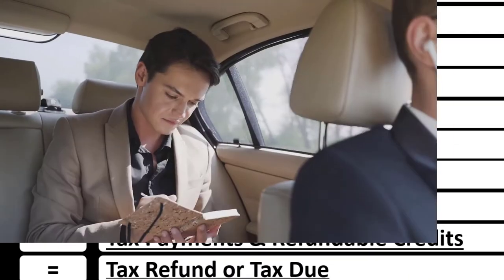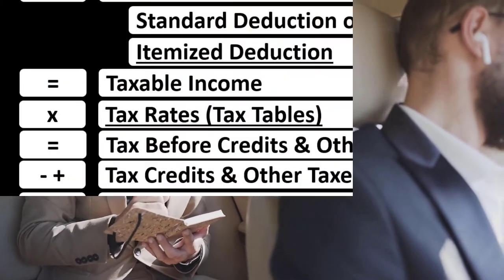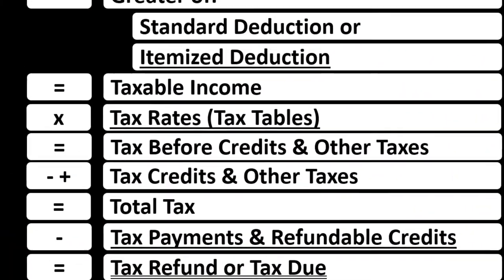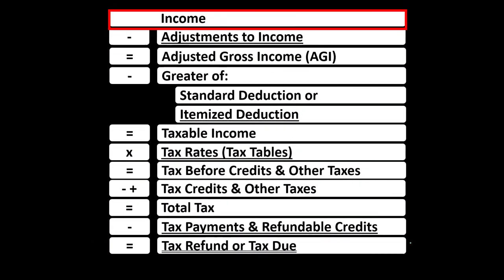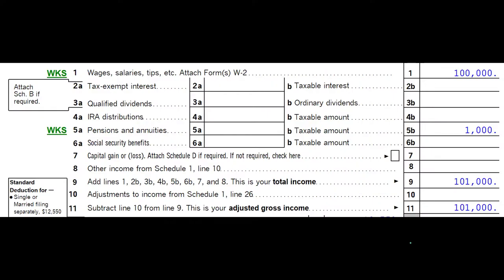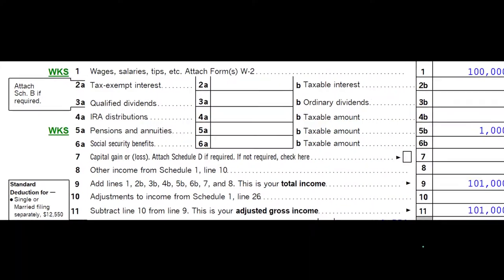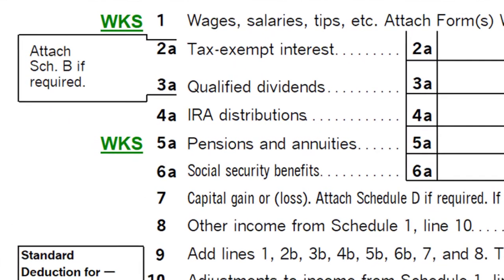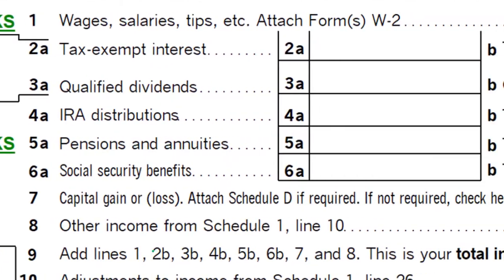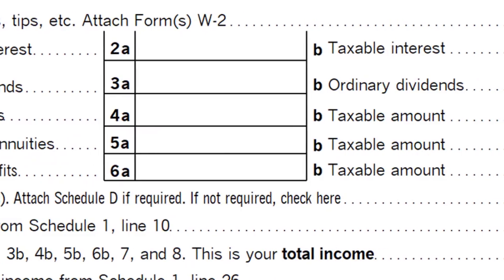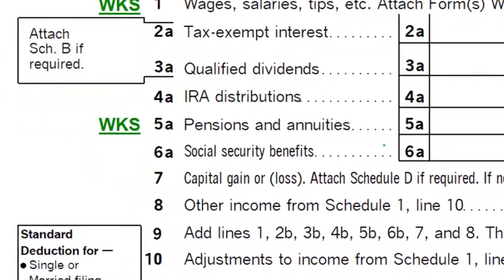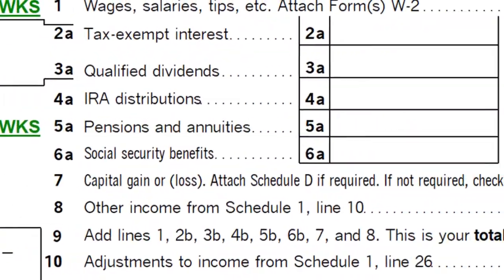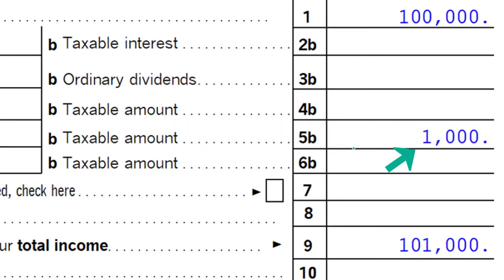Schedules such as Schedule 1 and other forms — forms such as Schedule C, Schedule E, Schedule D, and so on. This is page 1 of Form 1040. We're concentrating this time on the pensions and annuities, where we have lines 5A and 5B, including in this example $1,000 from it.